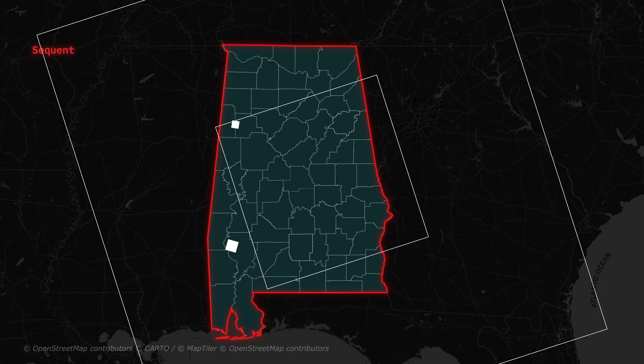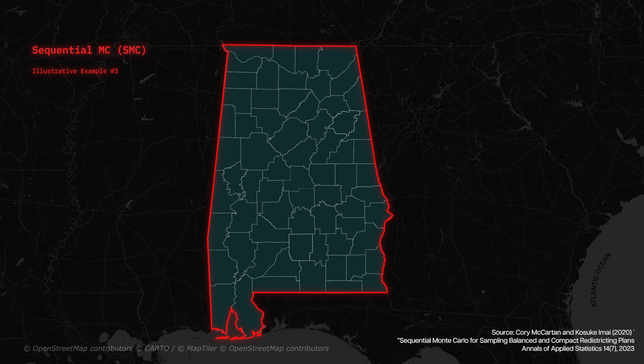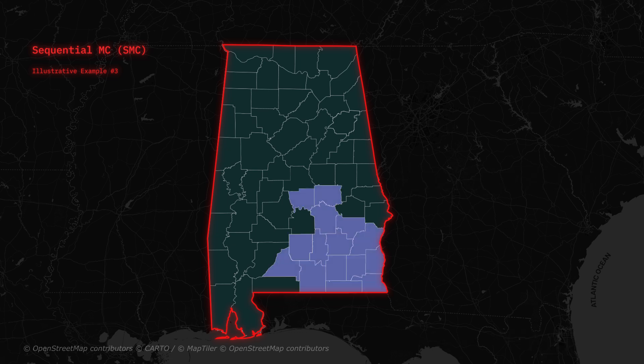So we have Sequential Monte Carlo. This time we don't need an initial plan or anything. We start off with one huge district. We create a spanning tree like our recombination approach, then make a split so we have two districts — one which will be final, an actual district that we'll use, and the other will be split again. And we keep doing this until we get the right number of districts.